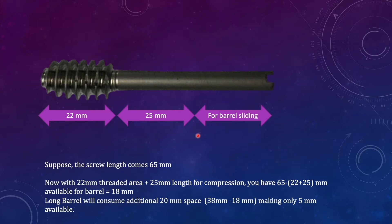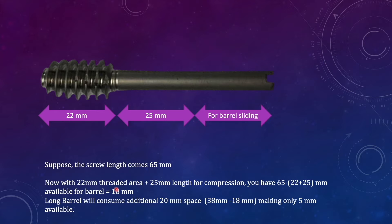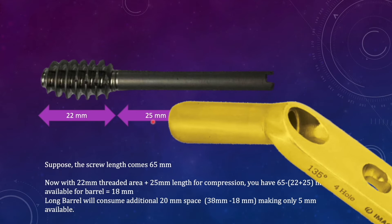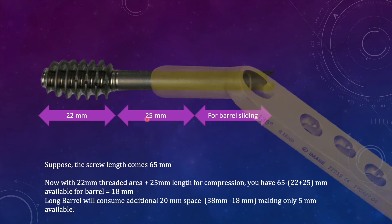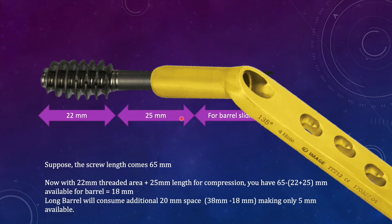Now suppose the screw length measured after placing the guide wire comes out to be 65 millimeter. We have 22 millimeter for the threaded area and 25 millimeter required for compression, so the length remaining for the barrel is 65 minus 22 minus 25, which comes out to be 18 millimeter. Now if we slide the long barrel completely, the 38 millimeter barrel will consume the space available for collapse or compression. Subtracting the 38mm barrel from the 18mm available gives a difference of 20 millimeter.